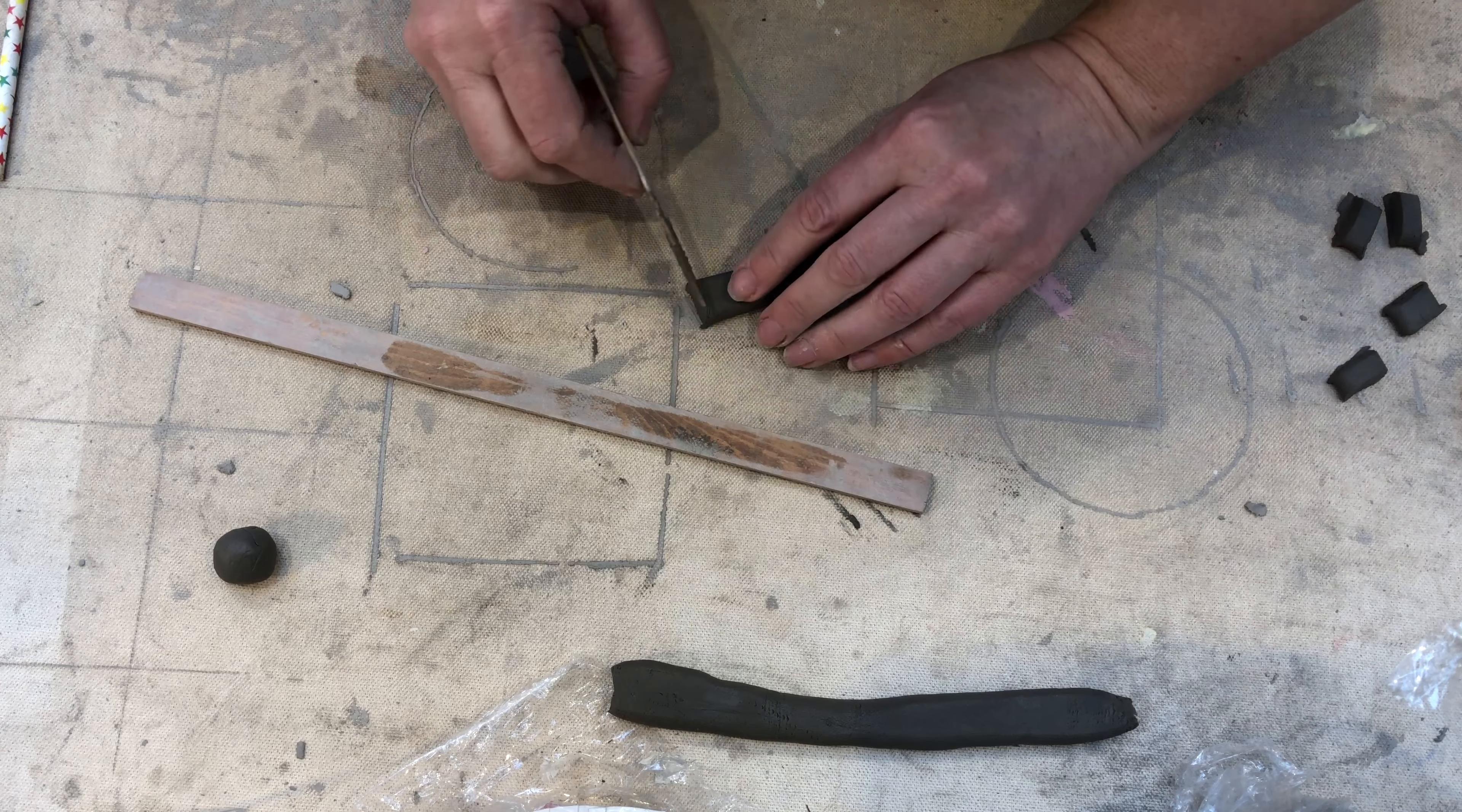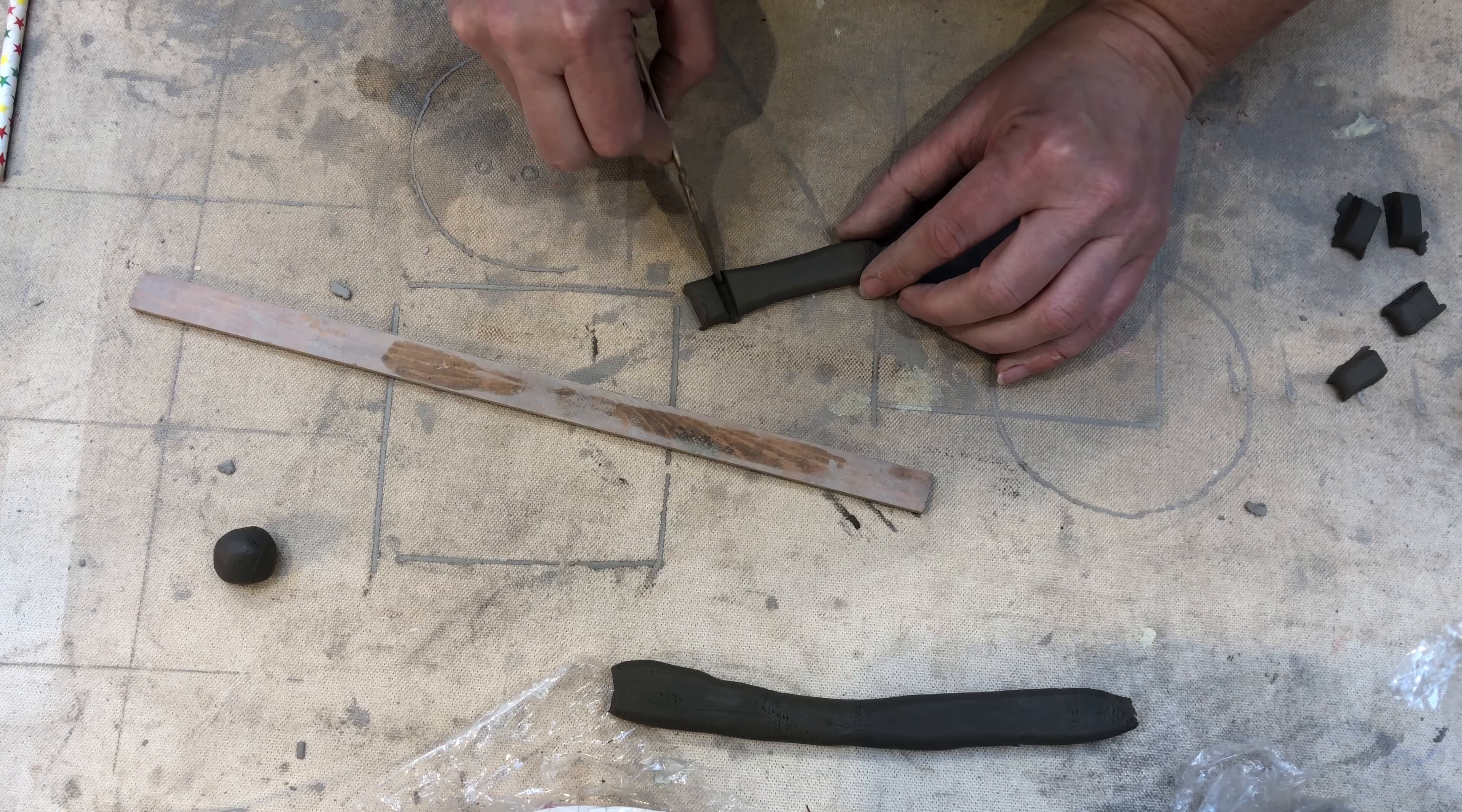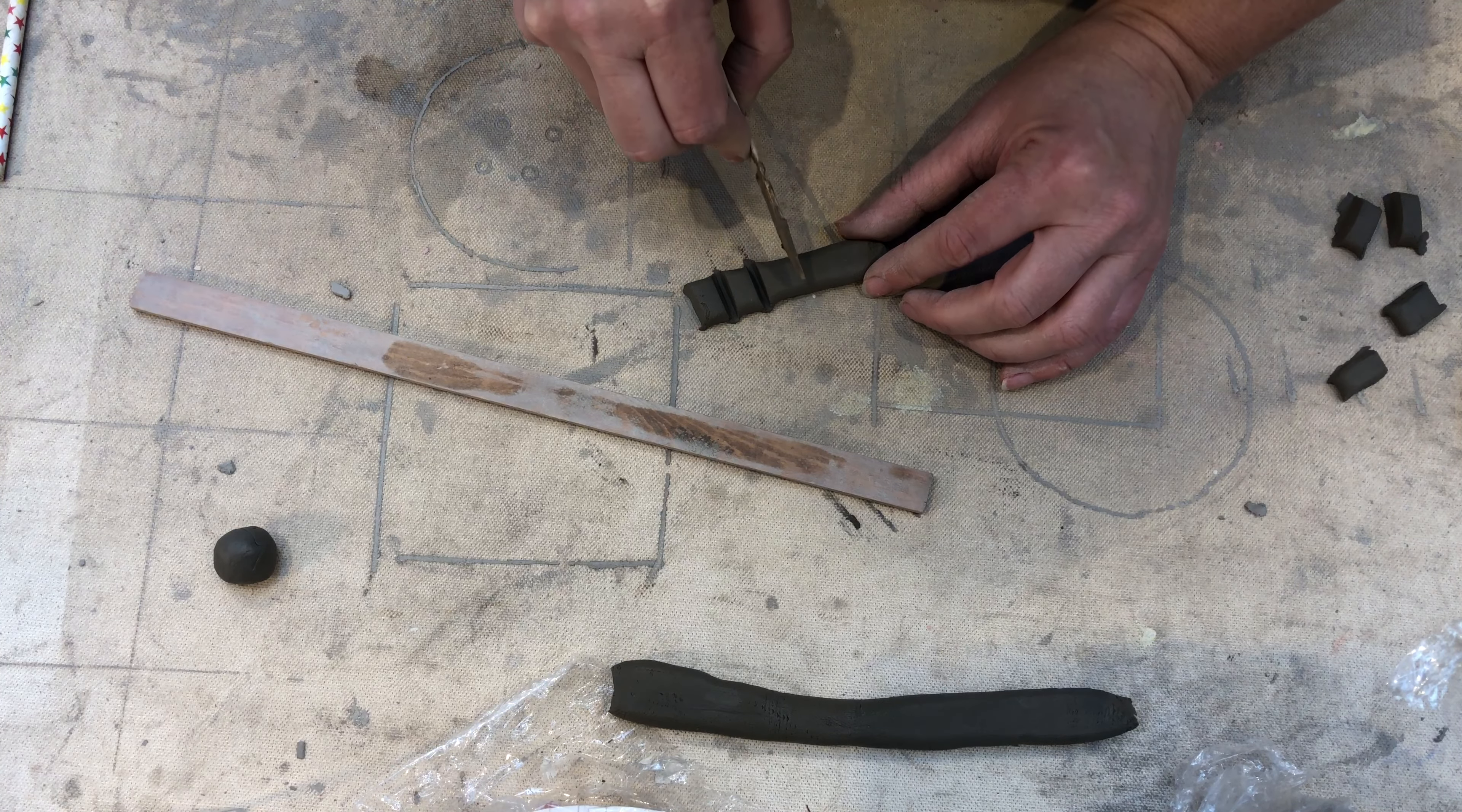Now we're going to cut it into four equal parts. These will be the little feet that we'll attach to the bottom of the dishes.